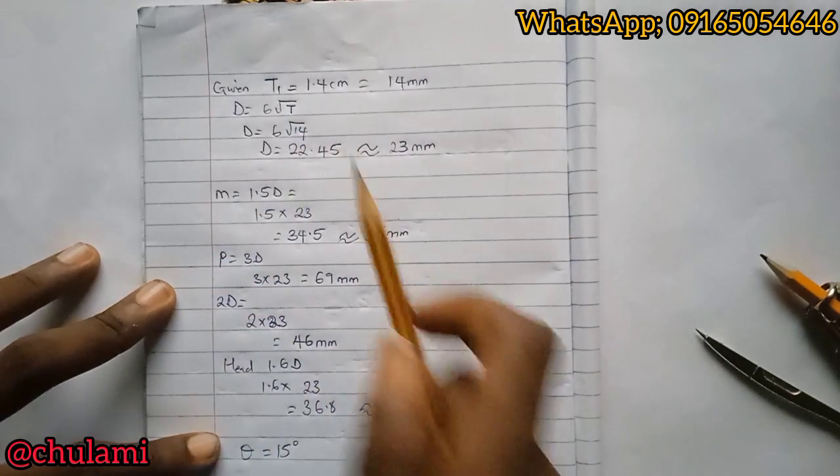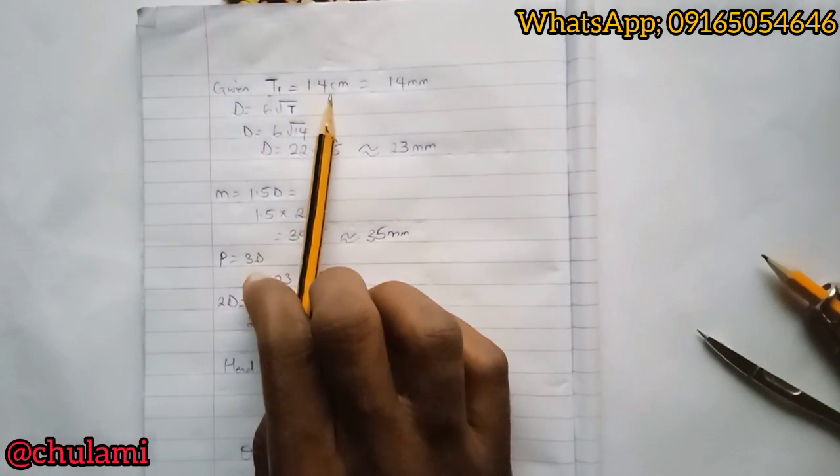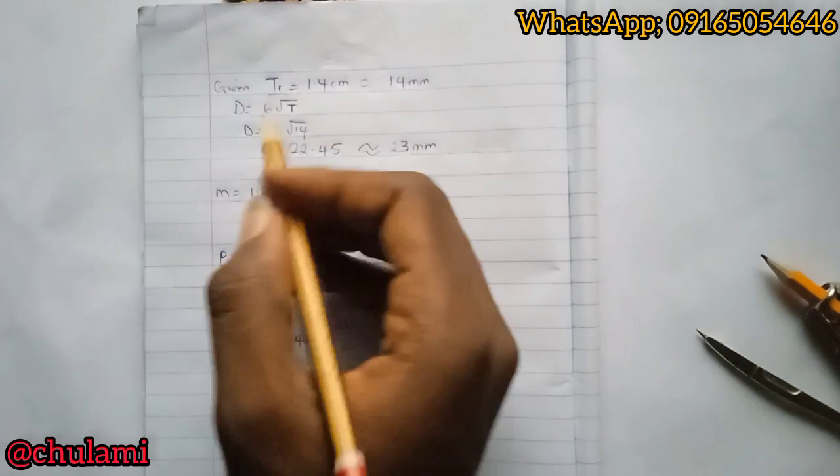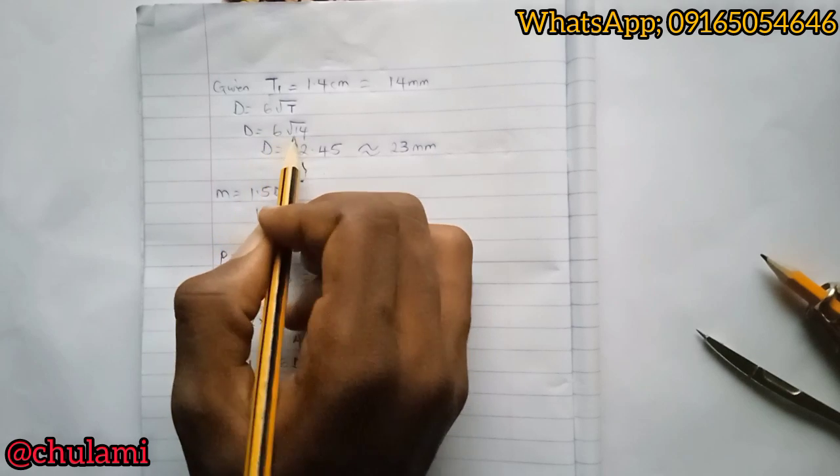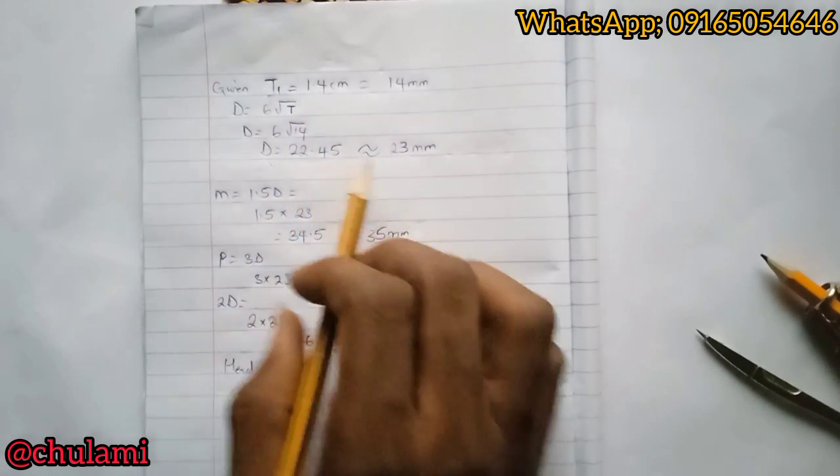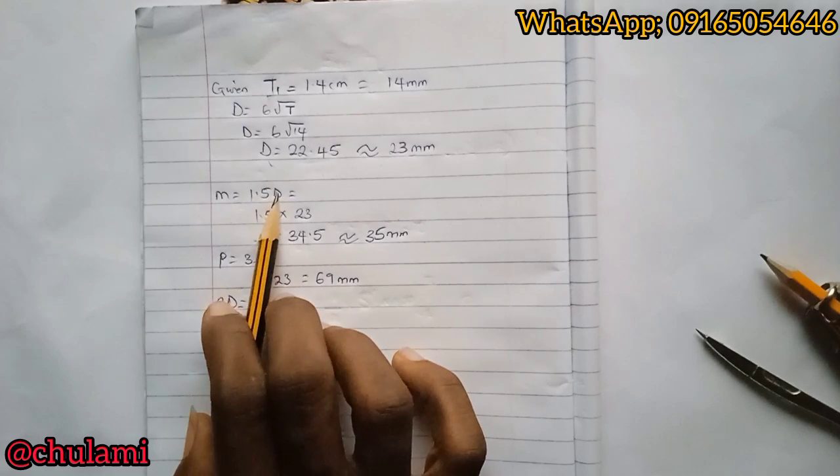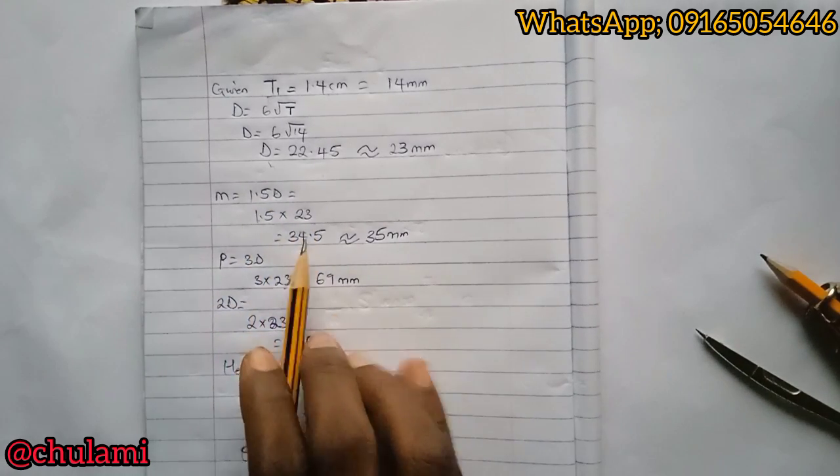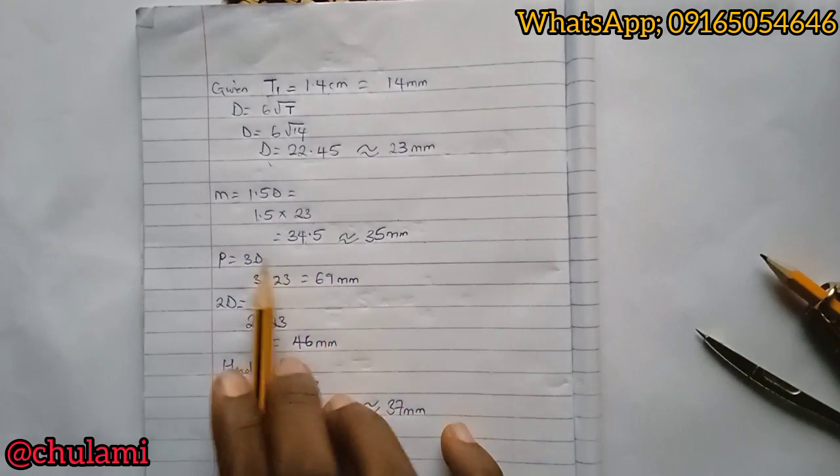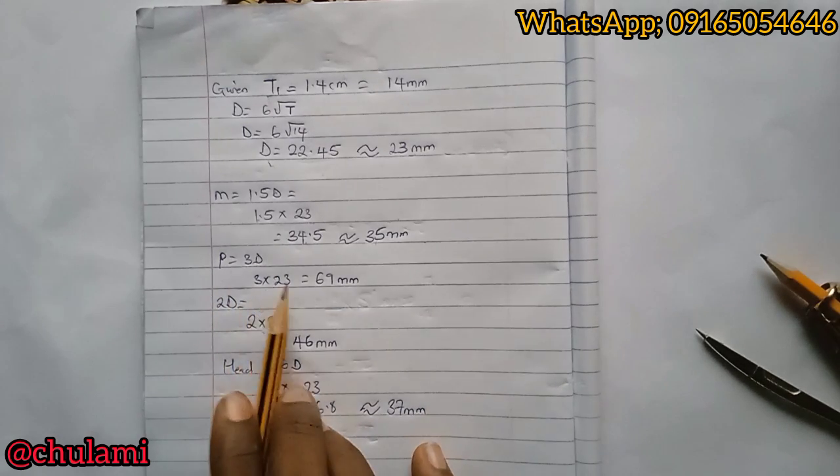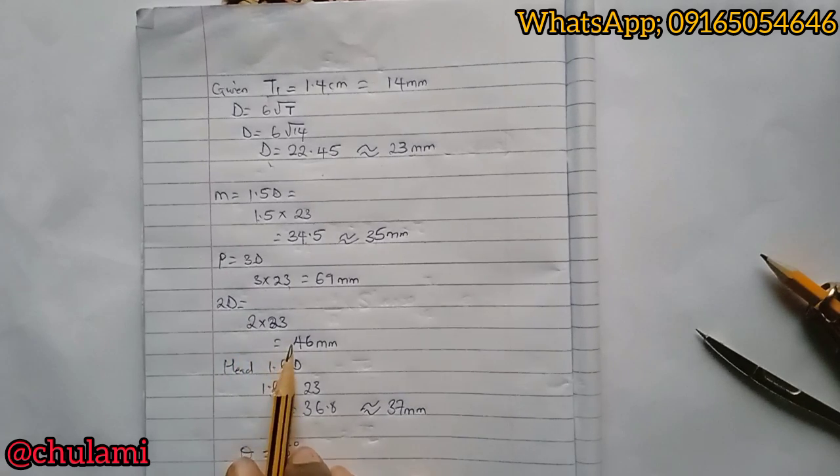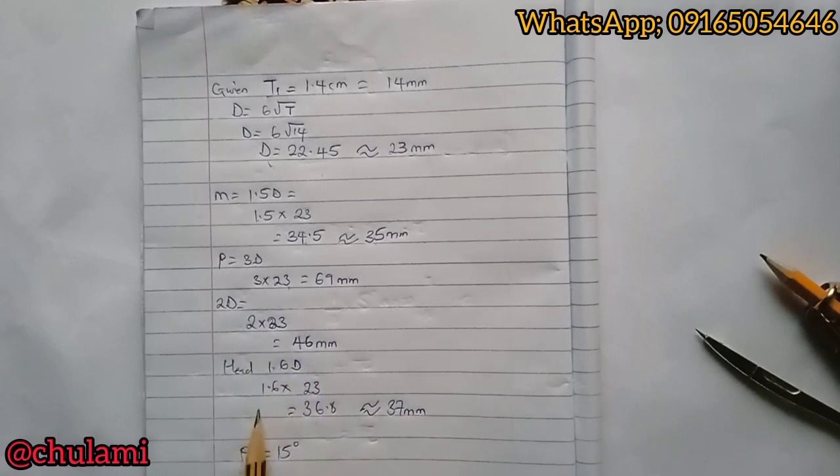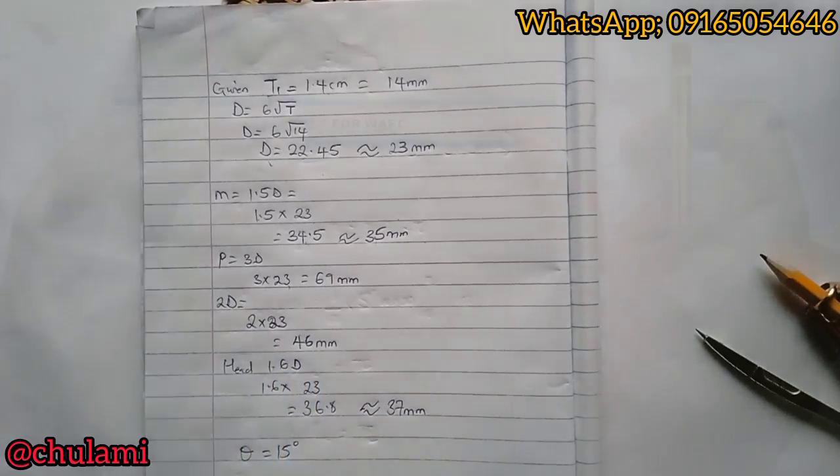Given: T1 equals 14 millimeters. Diameter is equal to 6 root T, so diameter equals 6 root 14, which gives us approximately 23 millimeters. M equals 1.5D, which gives you 35 approximately. Pitch equals 3D, that's 3 times 23, giving 69 millimeters. Then 2D, 2 times 23, gives 46 millimeters. The head of our rivet is 1.6D, which is 37. The angle of chamfer is 15 degrees.